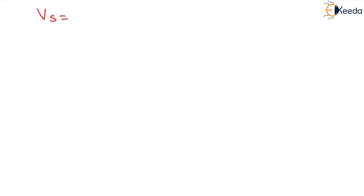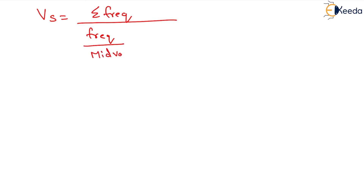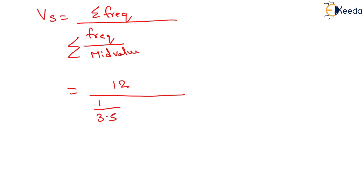Now we have to determine the space mean speed, for which the formula is: summation of all the frequencies, divided by the frequency of each individual term divided by the mid value — that is, summation of frequency upon summation of (frequency divided by mid value). The summation of frequency equals 12. The terms are: frequency 1 with mid value 3.5; frequency 4 with mid value 7.5; frequency 0 with mid value 11.5; and frequency 7 with mid value 15.5.